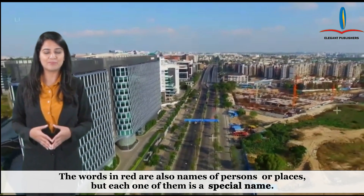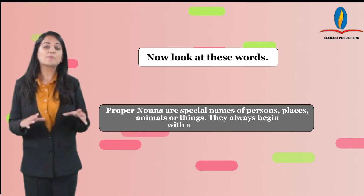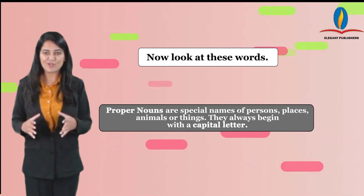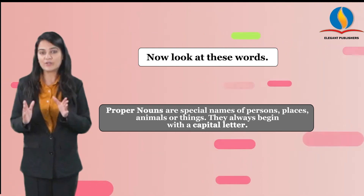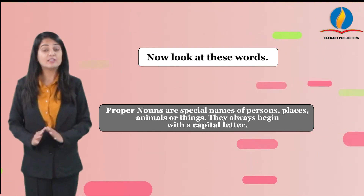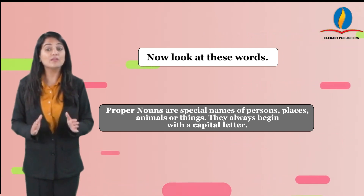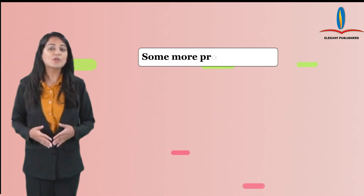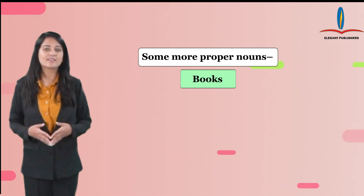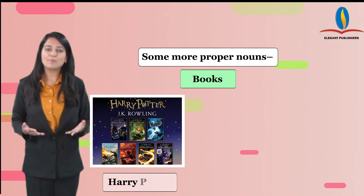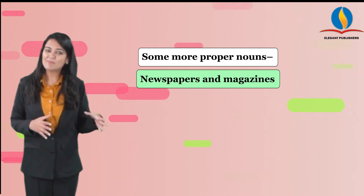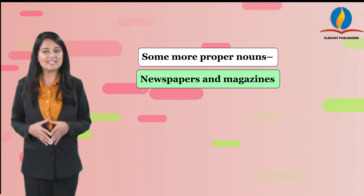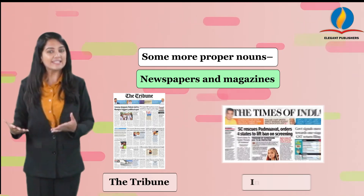Proper nouns are special names of persons, places, animals, or things. They always begin with a capital letter. Some more proper nouns — books: Harry Potter, Adventures of Tom Sawyer; newspapers and magazines: The Tribune, India Today.